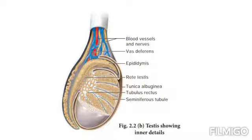Seminiferous tubules are made up of two types of cells: Sertoli cells and spermatogonic cells. Sertoli cells provide nourishment to the sperms till maturation.